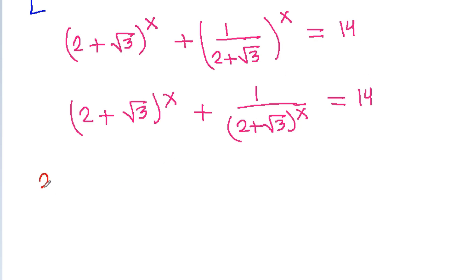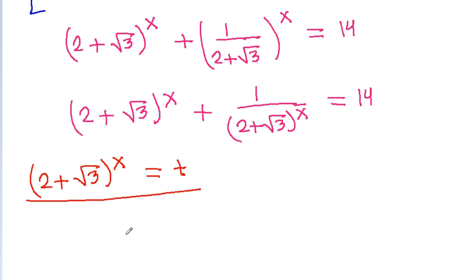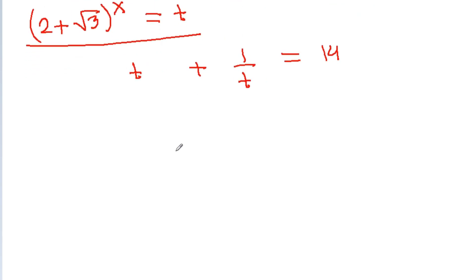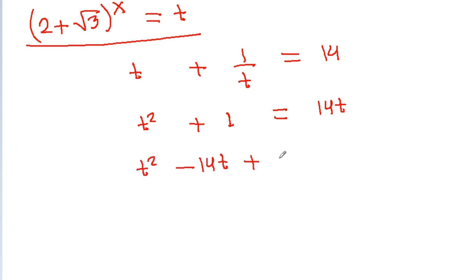If we take t = (2 + √3)^x, then we will get t + 1/t = 14. Multiplying through, t² - 1 = 14t, so t² - 14t - 1 = 0.